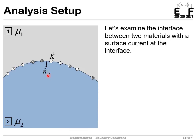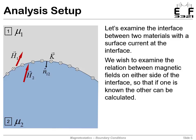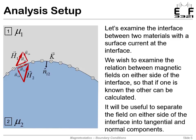We also have a surface normal pointing from medium 1 to medium 2, indicated by the subscript 1,2. We'll have a magnetic field on either side of that interface — really what we're drawing is the magnetic field immediately at the interface. We want an equation that relates those two so that if we know one, we can calculate the other. We decompose those fields into normal and tangential components, as the normal and tangential components have different boundary conditions.